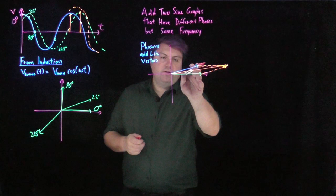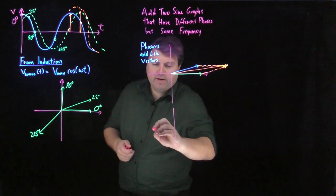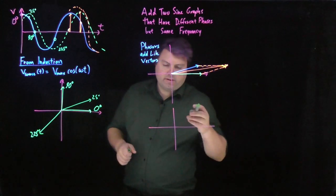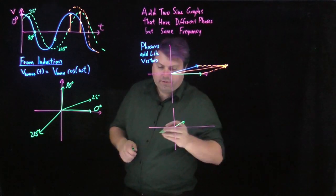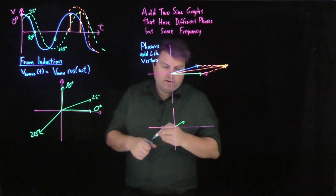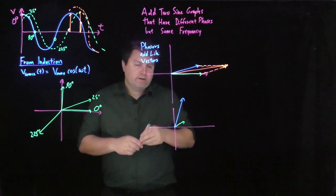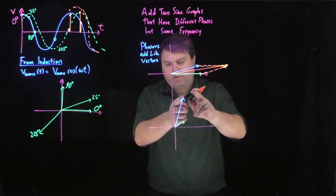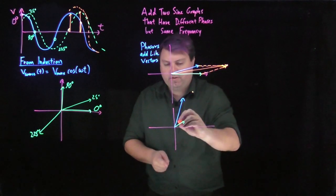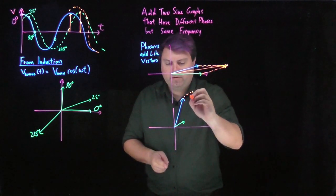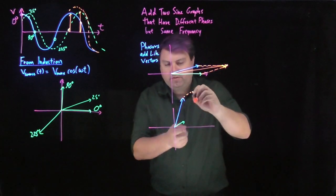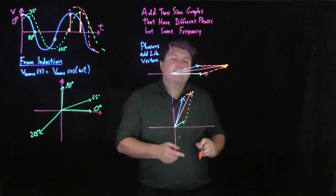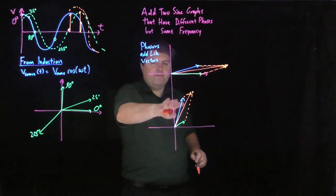So, I can also do this for two different vectors that don't have the same magnitude. If I have one vector with a small magnitude and one vector with a significantly larger magnitude, I can still do vector addition rules. And then I would get the vector addition of these.